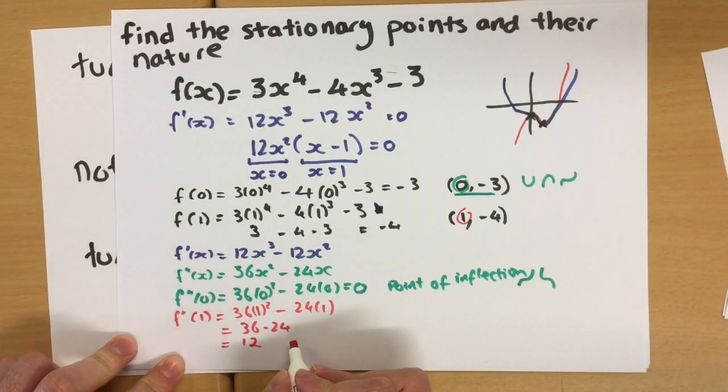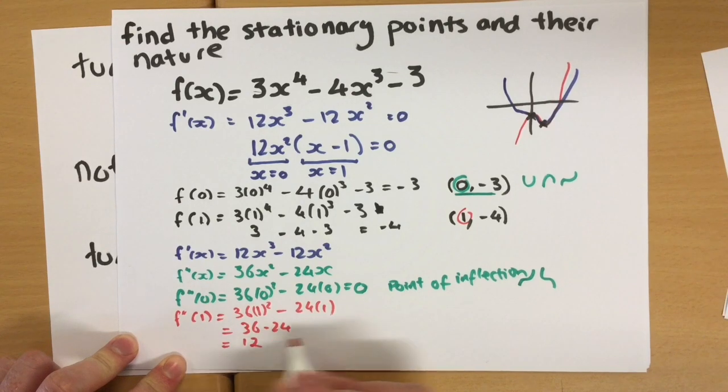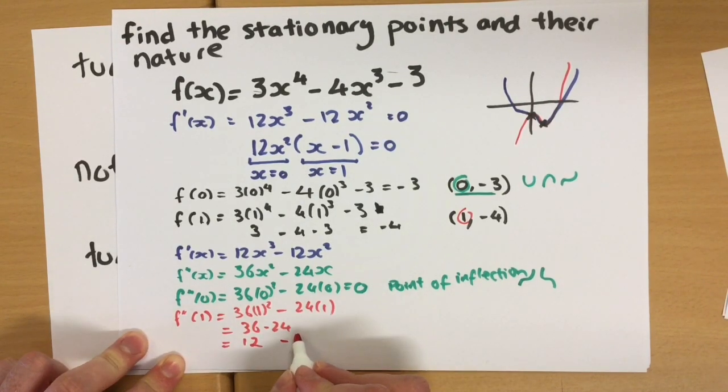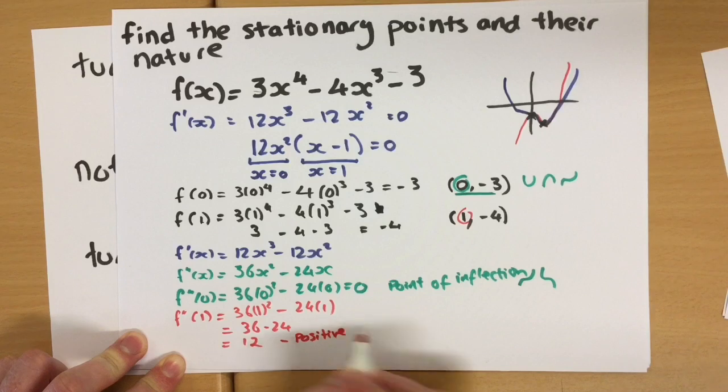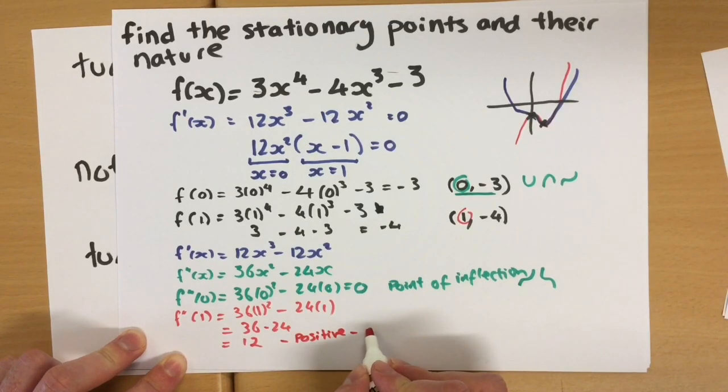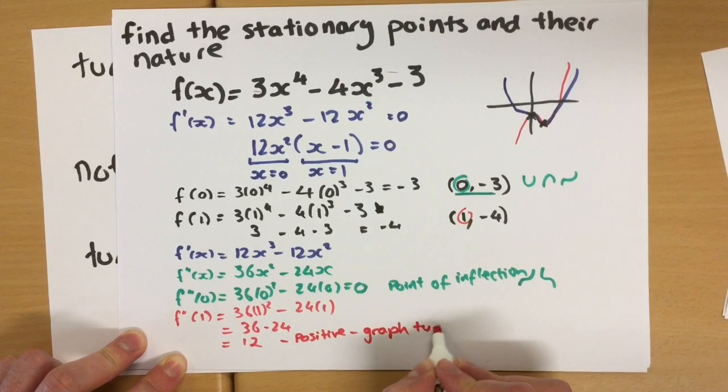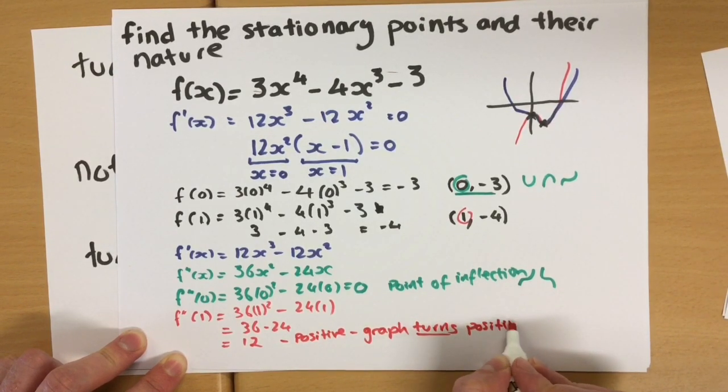Okay, this is a minimum point. Because this is positive, it tells us that our graph turns positive around this point.